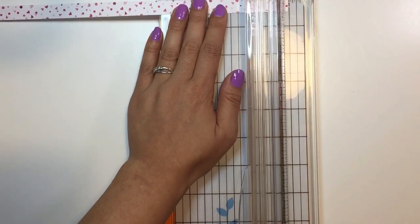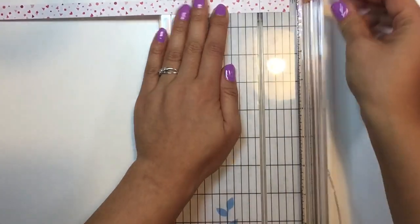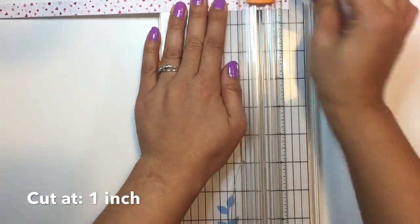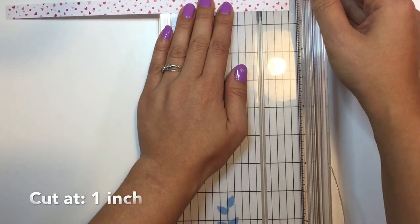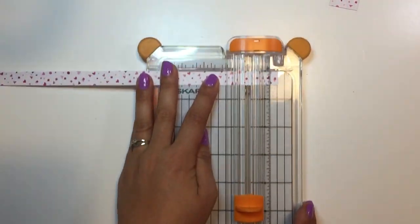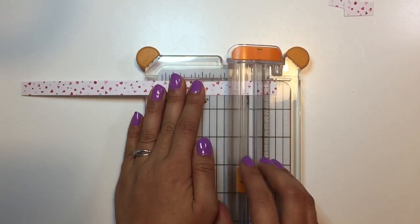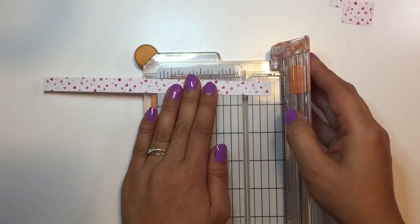And then you're going to want to cut at one inch. So at one inch, it makes exactly 12 of these, so you can use them for each embellishment, and these will be the little letter inserts for the envelopes.